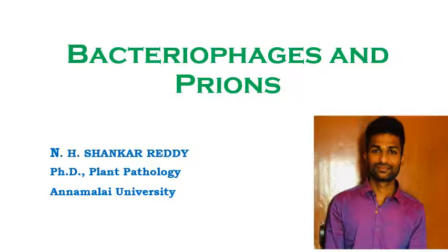Bacteriophages and prions. These are the types of pathogens that can cause diseases in plants and animals. We will now see a detailed description about bacteriophages and prions and the types of diseases that can be caused by them.